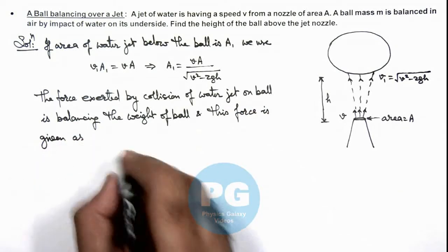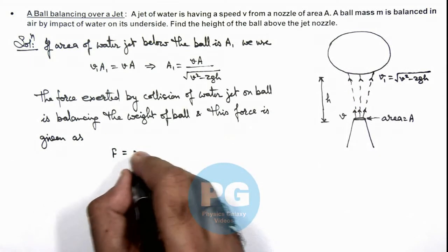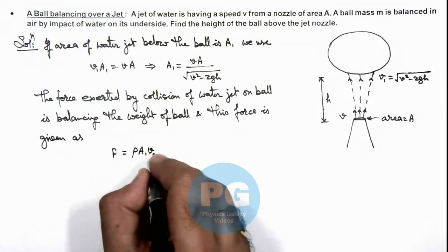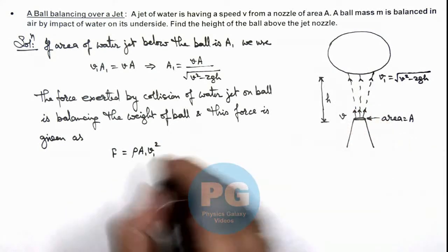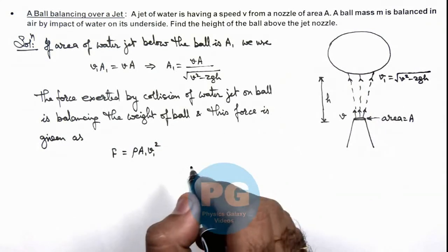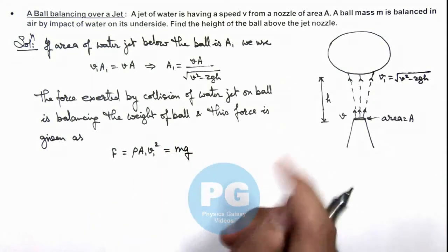We have already studied the force due to collision of a water jet. We calculate it as ρ A1 v1 squared, if A1 is the area of cross section and v1 is the speed with which water jet is colliding. So this will be balancing the weight of this ball, which is mg.